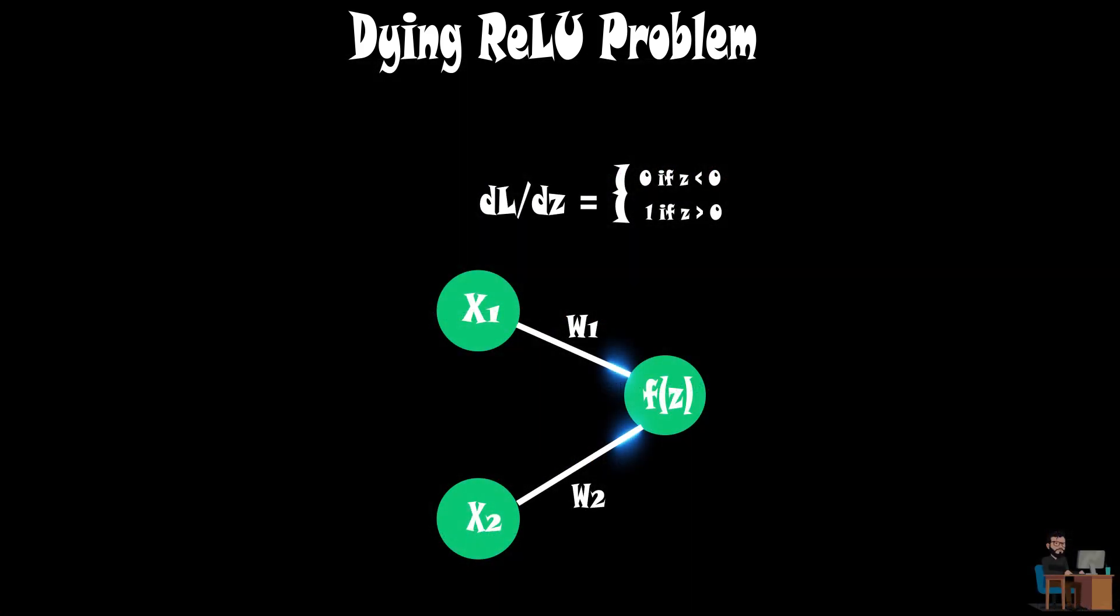To fix this, we have to modify the activation function in such a way that when the gradient becomes zero, the function returns a very small gradient that will make a tiny change in weights since the gradient is not absolute zero.